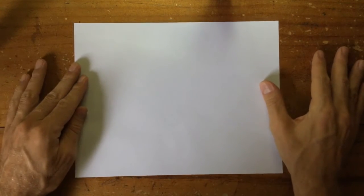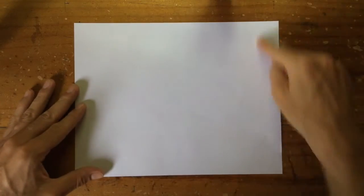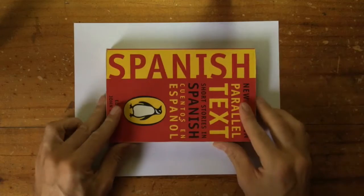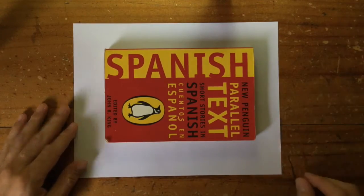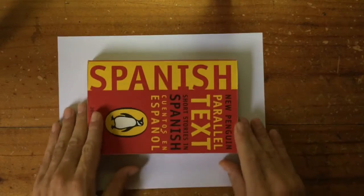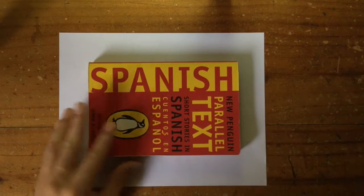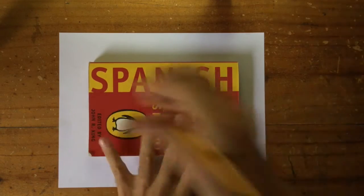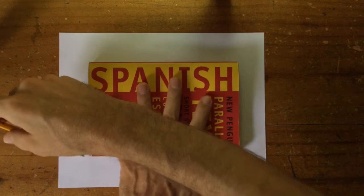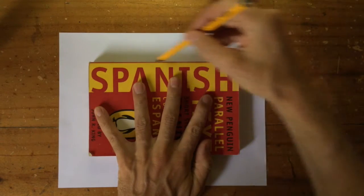So the first thing we'll do today is draw around a book to give ourselves a rectangle within the rectangle, like a kind of picture frame. So any old book will do. This is my Spanish parallel textbook where it's got one side in Spanish, the other side in English. Very useful for reading and learning another language.